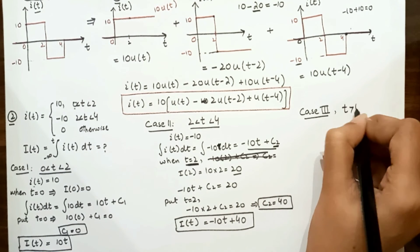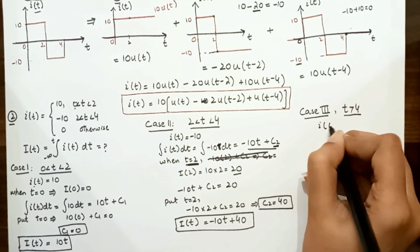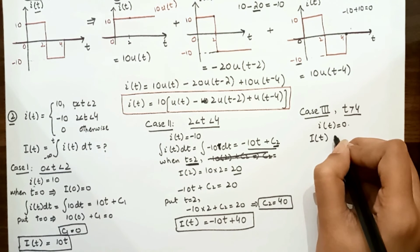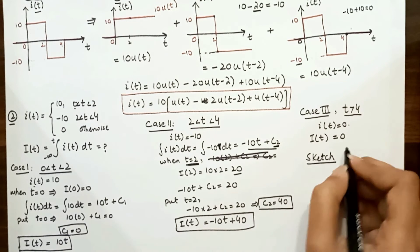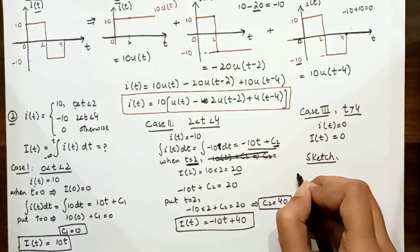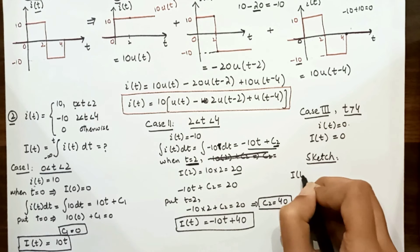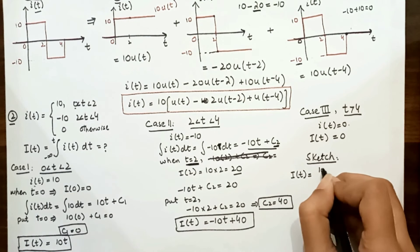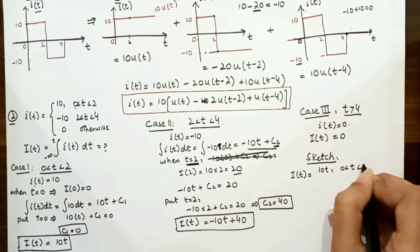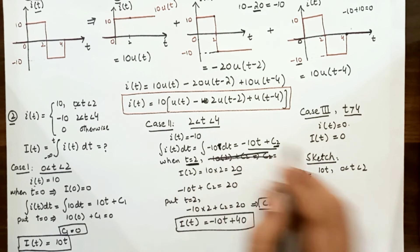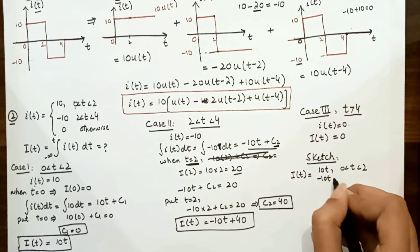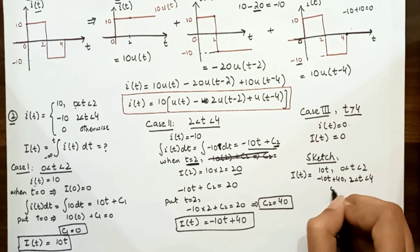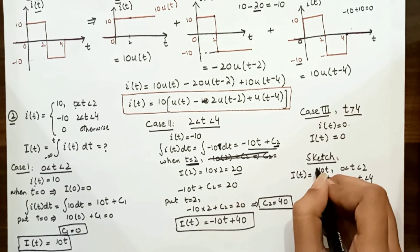Case 3: for t greater than 4, i(t) = 0, so the integral is also 0. Summarizing the integrated function I(t): it equals 10t for t between 0 and 2; equals −10t + 40 for t between 2 and 4; and equals 0 for t greater than 4 and all other values of time.